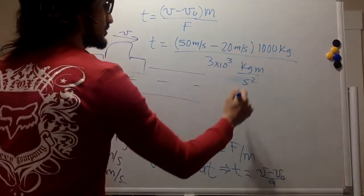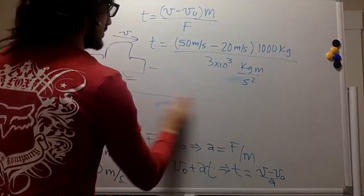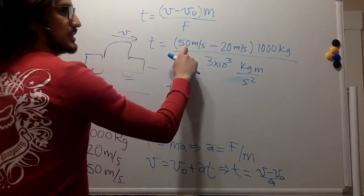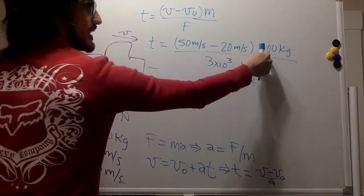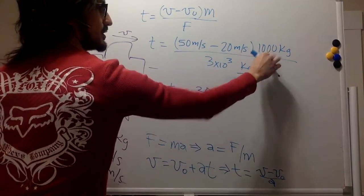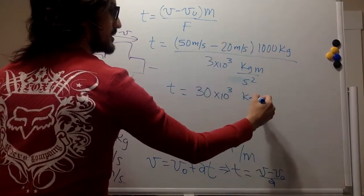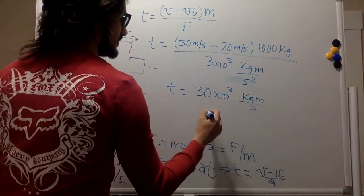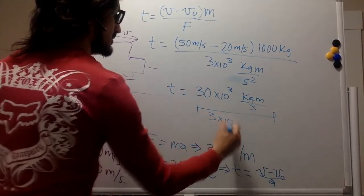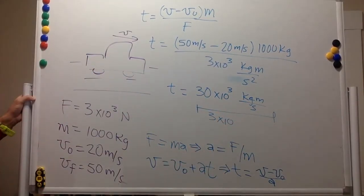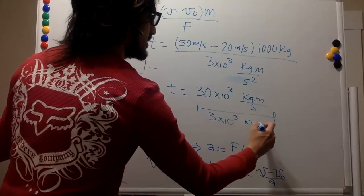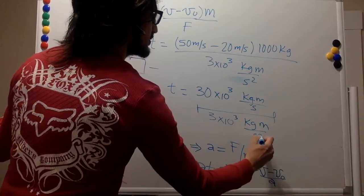Let's look at the units first. This is going to be 30, and this is going to be 1,000, so 30 times 10 to the 3. The units are kilogram meter per second. And we are dividing by 3 times 10 to the 3 kilogram meter per second squared.